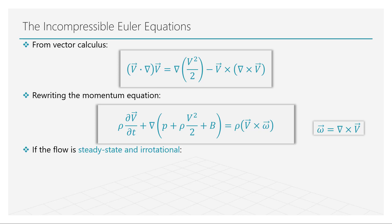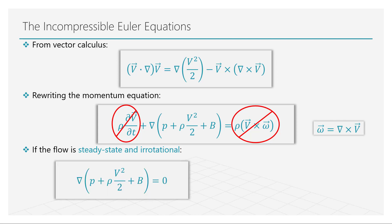If we additionally assume that the flow is invariant with time — i.e., a steady state flow — and that the vorticity of the flow is negligible, the momentum equation can be rewritten in the form shown here. This equation means that the gradient of the term in the brackets is zero, meaning that the term should be a constant. If this looks familiar, you are correct — it is the general form of the famous Bernoulli's principle.